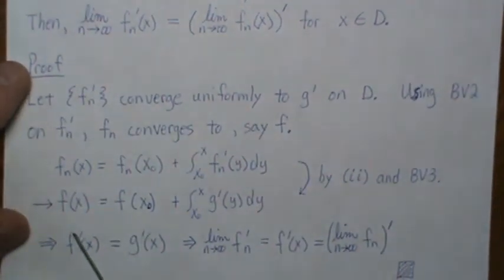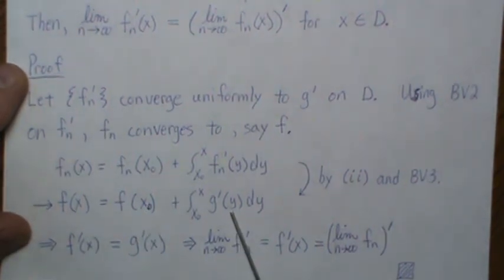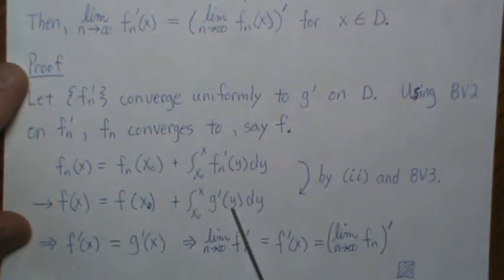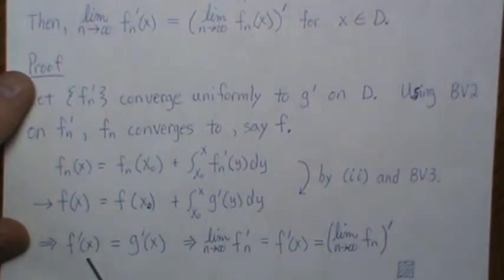So then if we take the derivative of this here, we get f prime and this with respect to x. So this is constant. And then you take the anti-derivative and then the derivative, you get this. So f'(x) = g'(x).